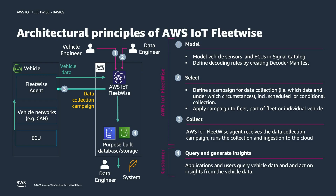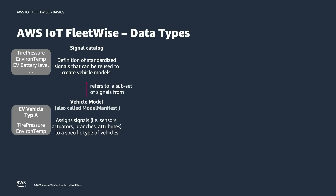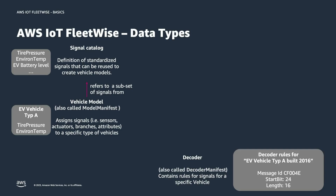Now let's have a look at the different data types that AWS IoT FleetWise is built on. Starting with the signal catalog — the definition of standardized signals that can be reused to create vehicle models. One signal catalog contains all the signals according to VSS, the Vehicle Signal Specification, within your AWS account. The second data type is the vehicle model, also called model manifest, which assigns a subset of signals to an individual vehicle model.